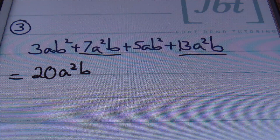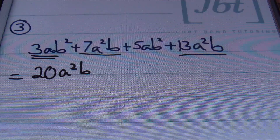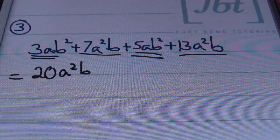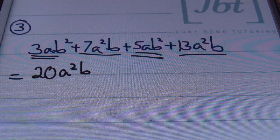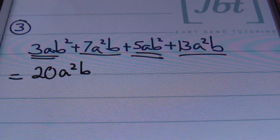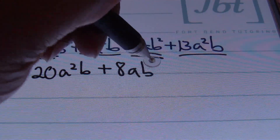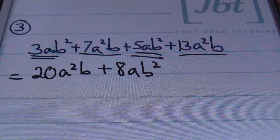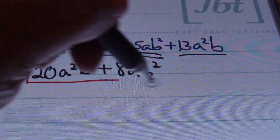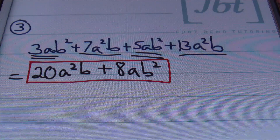Then I'll be combining my ab squared terms. I have two of those: 3ab squared and 5ab squared. I'll be combining my like terms by adding my coefficients — the numbers in front of the variables. 3 plus 5 is 8, so I end up with a positive 8ab squared. So 20a squared b plus 8ab squared is the solution to problem number 3.